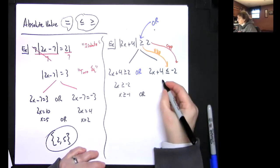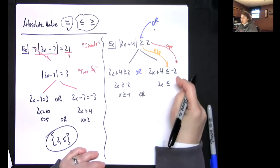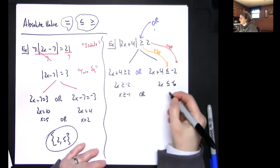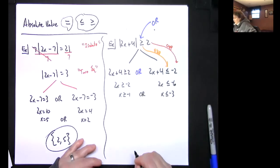2x less than or equal to, if I minus 4 will be minus 6, so x is less than or equal to negative 3. Now let's see if this makes sense on our number line.